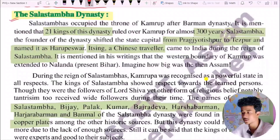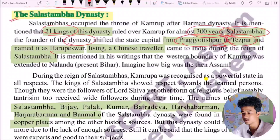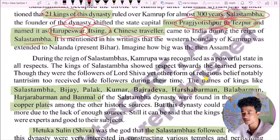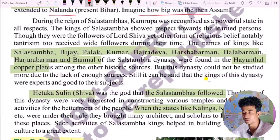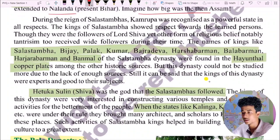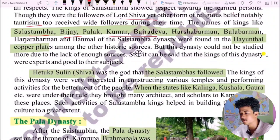It is mentioned that 21 kings of the Salasthambha dynasty ruled over Kamarupa for more than 300 years. The dynasty shifted the capital from Pragjyotishpura to Tezpur. During the reign of Salasthambha, it is mentioned in Chinese writings that the western boundary of Kamarupa was extended to Nalanda. Kamarupa was recognized as a powerful state in all respects.